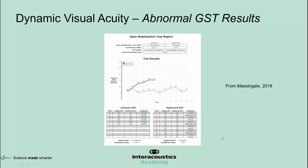The GST results for a patient with a right-sided lesion show that the GST velocity threshold is much lower at 75 degrees per second for rightward head movements, compared to greater than 150 degrees per second for leftward head movements. This suggests the patient will have an abnormal DVA for rightward head movements, which was confirmed. This also gives the therapist a good starting point at 75 degrees per second or slightly below to begin the head-eye coordination exercises.